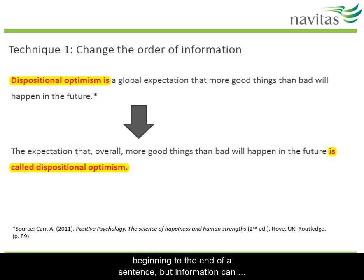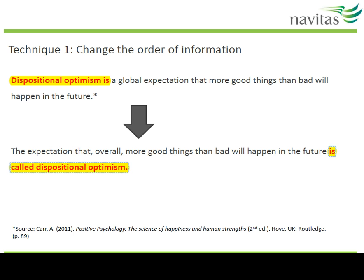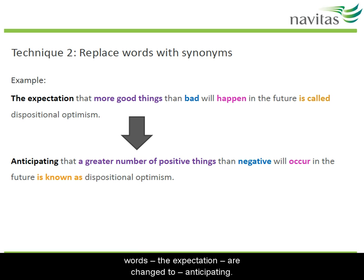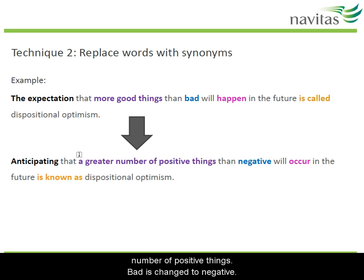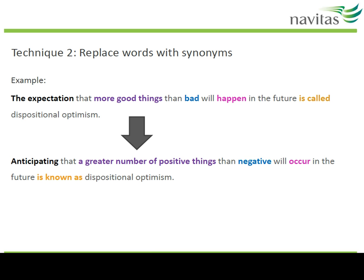This example shows information moving from the beginning to the end of a sentence, but information can also move to other places — such as the middle — depending on the grammar and length of each sentence. Moving on to replacing words with synonyms: in this example, 'the expectation' is changed to 'anticipating.' Also, 'more good things' is changed to 'a greater number of positive things,' 'bad' is changed to 'negative,' 'happen' is changed to 'occur,' and 'is called' is changed to 'is known as.' It's lucky there are lots of synonyms in English, otherwise all this replacing wouldn't be possible.